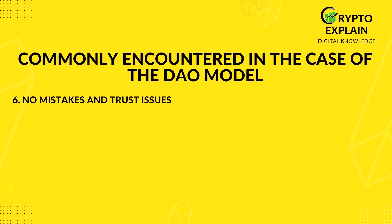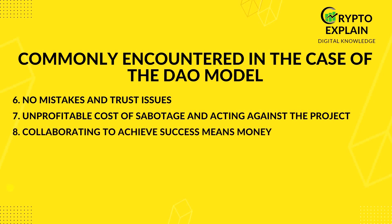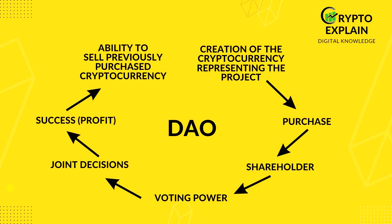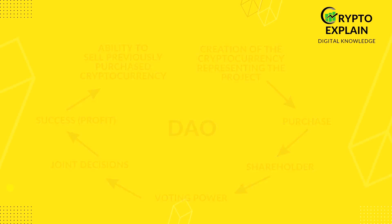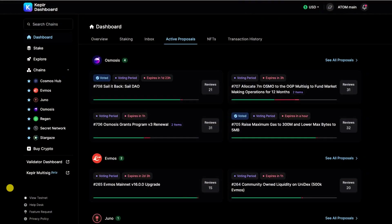Additionally, in the case of such a system, we don't have to worry about threats like sabotage or actions detrimental to the company. To have an advantage in voting and vote against the project, one would first have to spend a lot of money on tokens that entitle them to vote, which automatically makes acting against the project pointless. Each shareholder is interested in developing in the right direction, because that is the only way to have a chance at profits. To participate in a DAO, one typically needs to own cryptocurrencies representing specific projects, and these serve as indicators of our voting power. This is how projects like Uniswap operate, which is a decentralized cryptocurrency exchange. Another example is practically all projects based on the Cosmos network, where we can see all the votes for individual projects in one place.